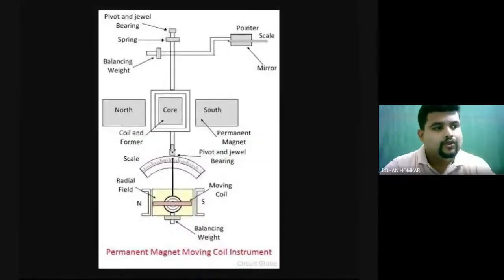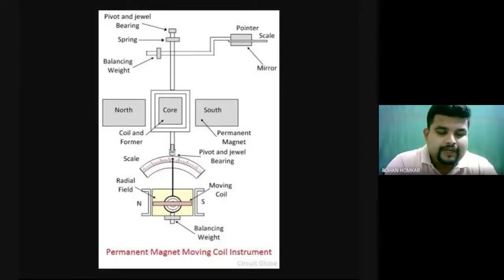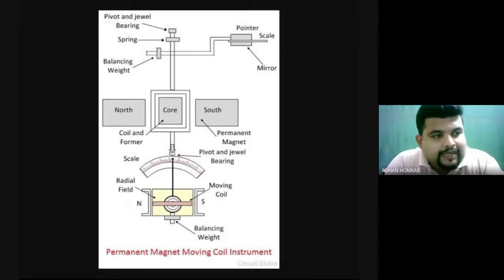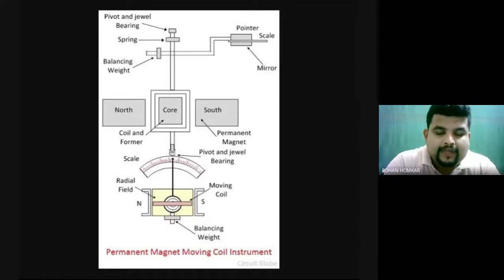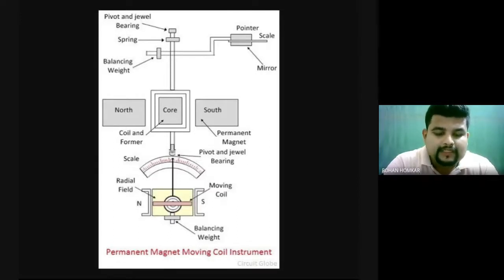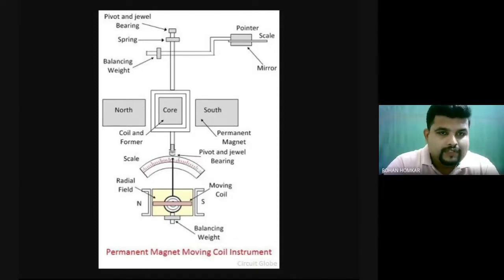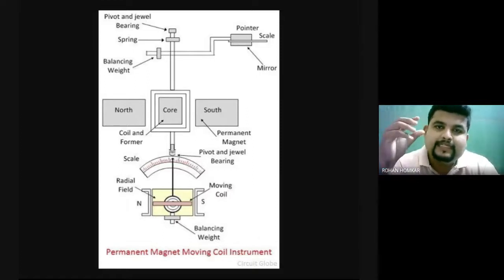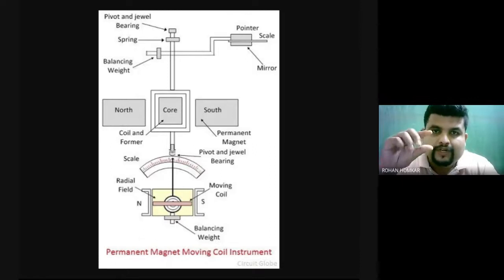In the Permanent Magnet Moving Coil (PMMC) instrument, instead of an electromagnet for the fixed coil, we use a permanent magnet to create a fixed magnetic field. This permanent magnet's value is constant. So already, one magnetic field is ready in the instrument. The second magnetic field will be created using the electrical parameter being measured.